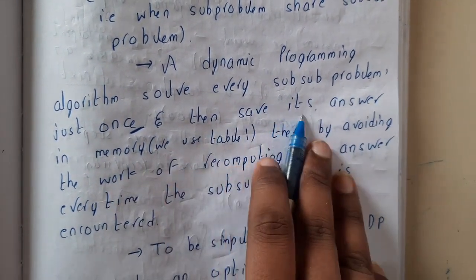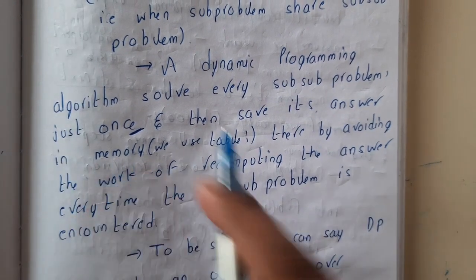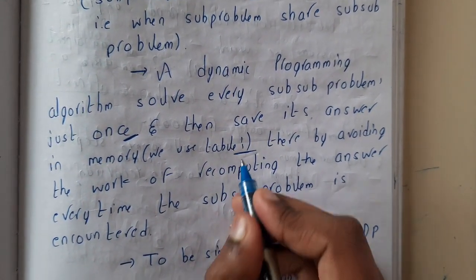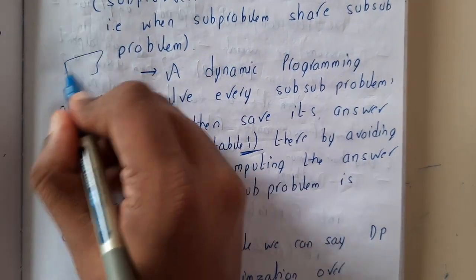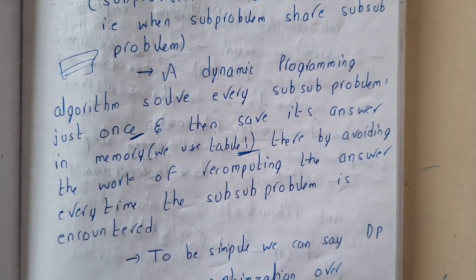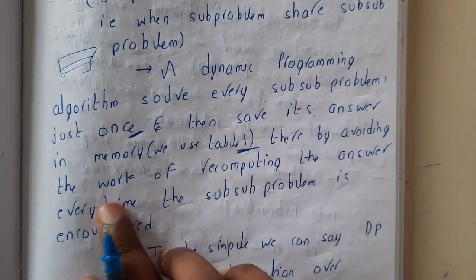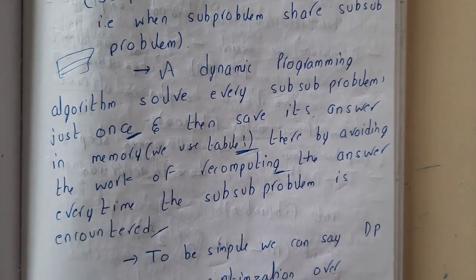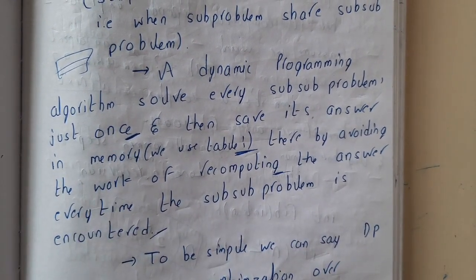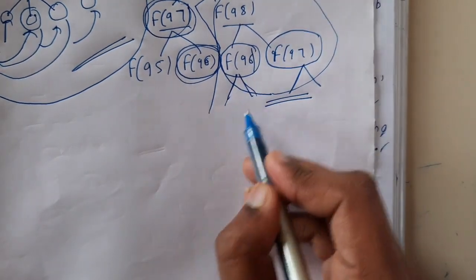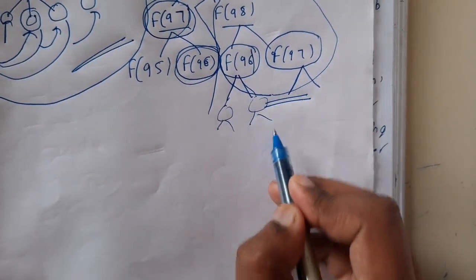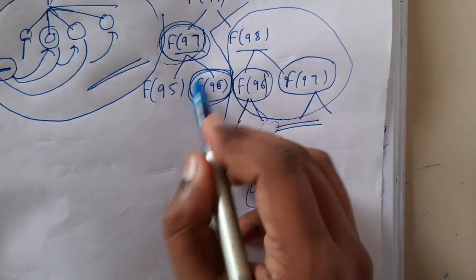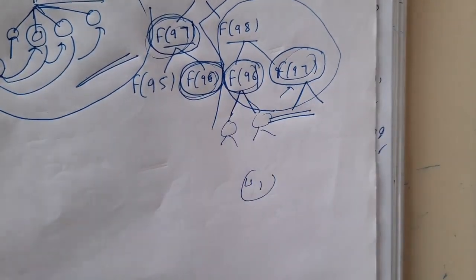In dynamic programming, we solve each subproblem only once, save its answer in memory using tables or similar structures, and thereby avoid recomputing the answer every time that subproblem is encountered. Instead of recursively going back to compute Fibonacci(96) multiple times, we simply store and substitute those values.